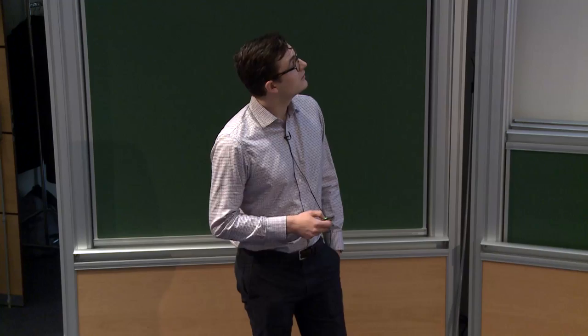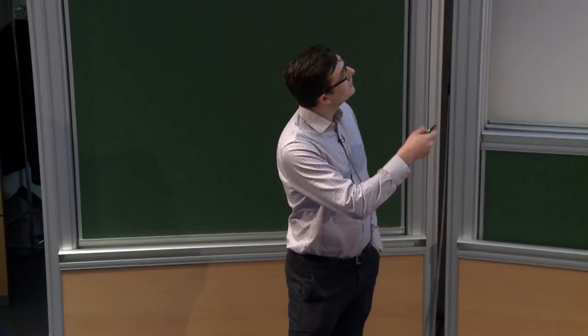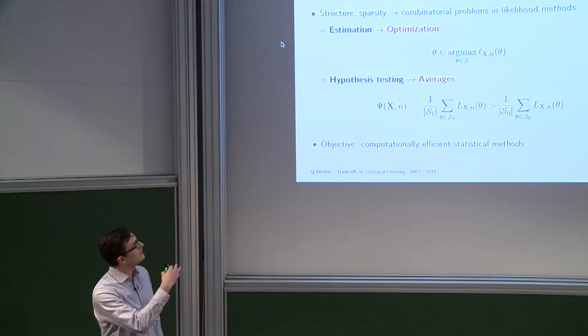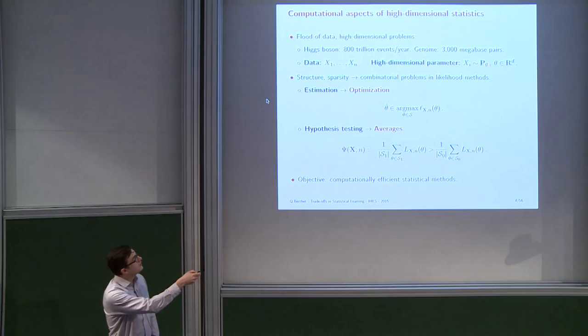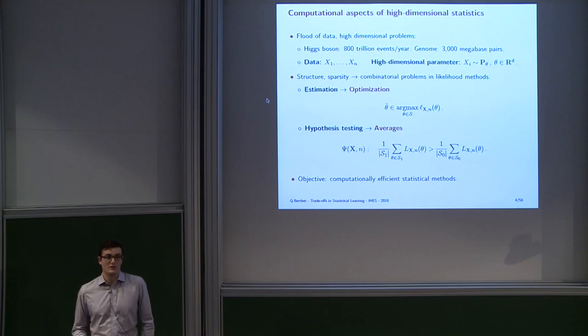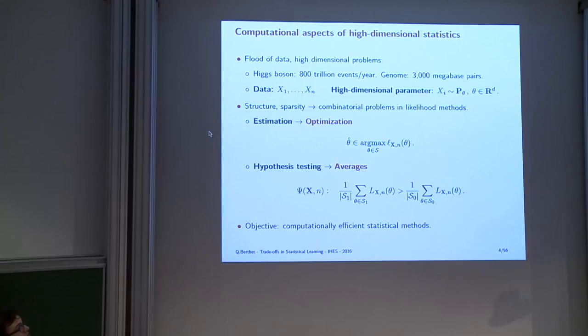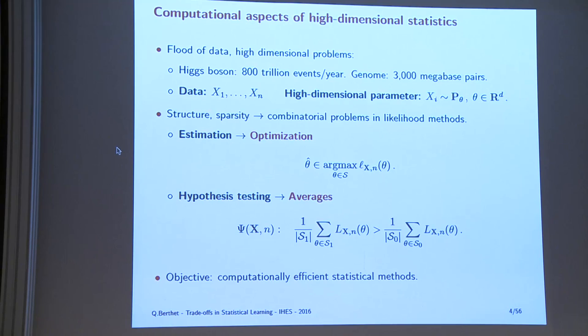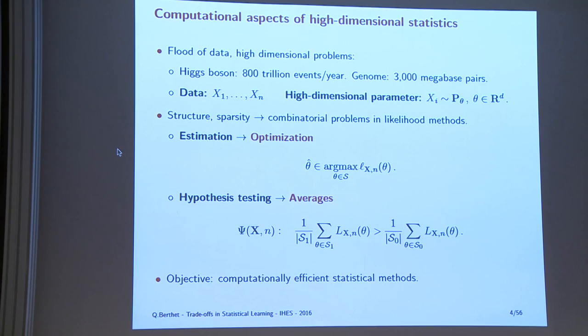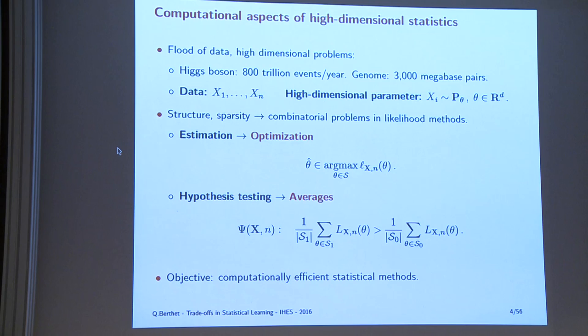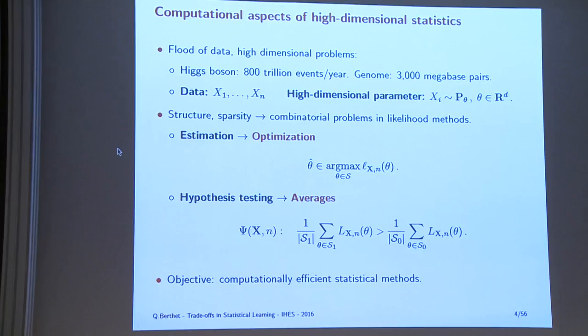When we have a lot of data and are trying to say something about a very high-dimensional parameter — D here can be very large, N can be very large — we often introduce assumptions about the model: structure, sparsity. We try to make the problem tractable from a statistical point of view. Statisticians' answers tend to be optimization problems. This creates combinatorial problems when you focus on the likelihood method. If you're doing estimation and want to solve an optimization problem, this might be intractable. If you're doing hypothesis testing and want to compute averages on very large sets, this might also be intractable.